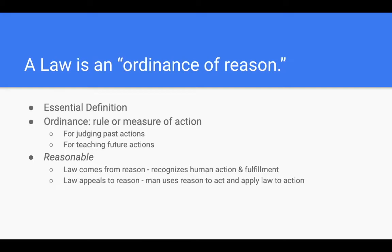The first thing is that a law is an ordinance of reason. This can be seen as an essential definition. If I were to ask you what is law, the most basic and simple answer would be: it's an ordinance of reason. What do we mean by ordinance? We mean essentially it's a rule — it's a measure of action. Specifically, it's used in two ways: it's used to judge past actions.